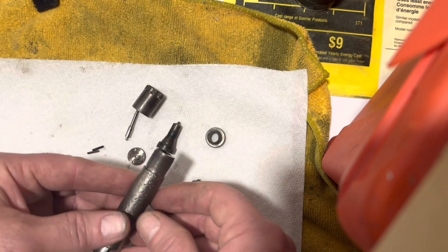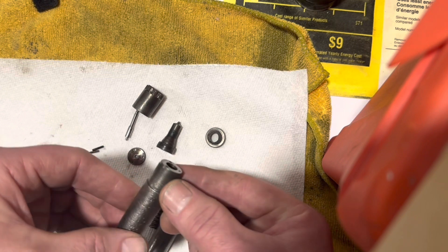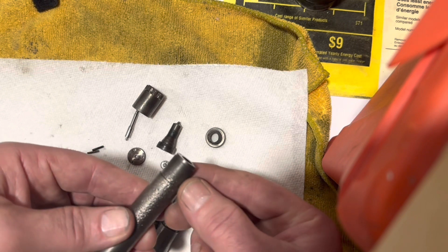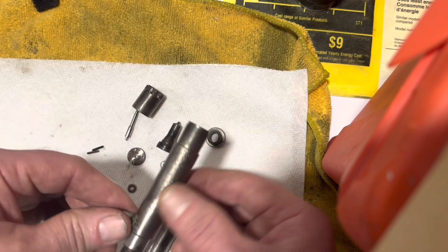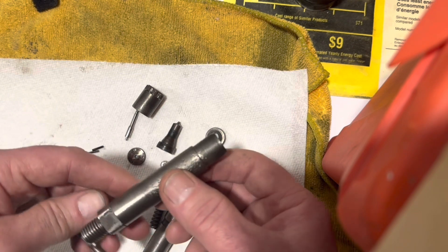So yeah, just clean that all up and put it back together. You could put anti-seize on there to keep the threads clean. This thing was really rusted into the block - the other ones weren't. This one's been in there a long time.